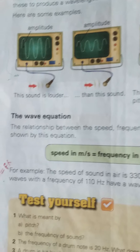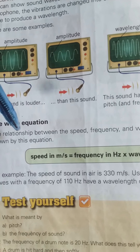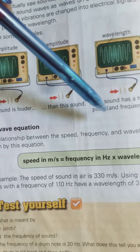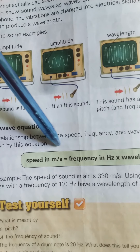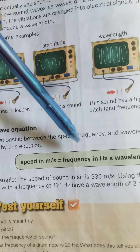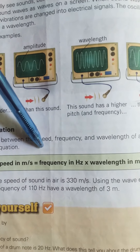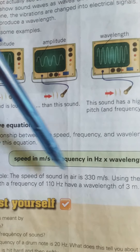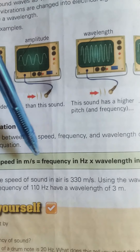Here we have the wave equation, which shows the relationship between speed, frequency, and wavelength. Speed in meters per second equals the product of frequency in hertz and wavelength in meters. Hertz is the unit of frequency and meter is the unit of wavelength.